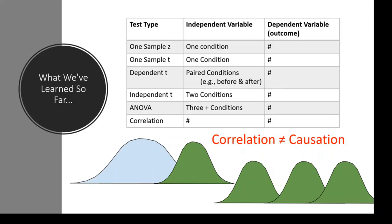Because I'm letting your height vary freely, I don't know if it's the reason why you have different income, or if there's something else and I'm just measuring height as an indicator of that. Correlations tell us very useful information about how variables are related, but they don't tell us what caused what to happen. Correlations just tell us about how two numerical variables are related.